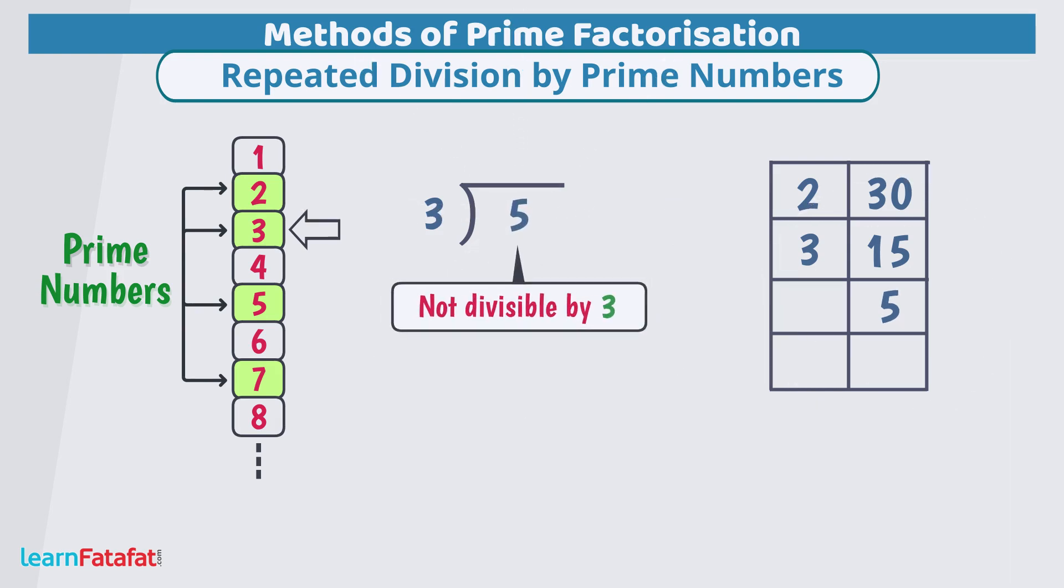Write 3 here and quotient 5 here. Check if we can divide the number 5 by 3. No, we can't. So, select next prime number 5. We will select 5 but not 4 because we want prime factors. 4 is not a prime number so we will not select it. Taking 5 as the next prime number, we will divide 5 so that quotient is 1.